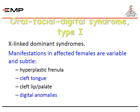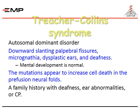Orofacial digital syndrome type 1 is an X-linked dominant syndrome. Manifestations in affected females are variable and include hyperplastic frenula, cleft tongue, cleft lip palate, and digital anomalies. Treacher Collins syndrome is an autosomal dominant disorder characterized by downward slanting of palpebral fissures, micrognathia, dysplastic ears, and deafness. Mental development is normal. The mutations appear to increase cell death in the prefusion neural folds. A family history with deafness, ear abnormalities, or cleft palate is characteristic.